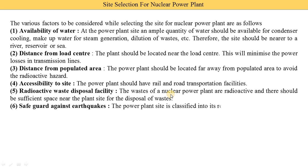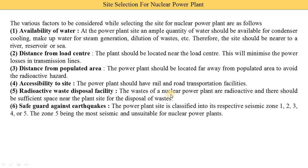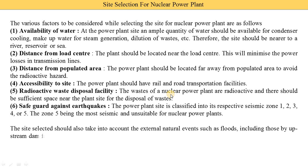The last point is safeguard against earthquakes. The power plant site is classified into its respective seismic zone — zone one, zone two, zone three, zone four, or zone five. Zone five is the most seismic and is unsuitable for nuclear plants. If any place falls in seismic zone five, we are not able to install a nuclear power plant there. The site selected shall also take into account external natural events such as floods, upstream dam failures, and tropical cyclones.